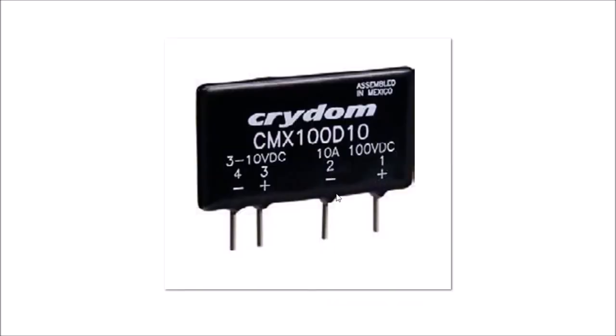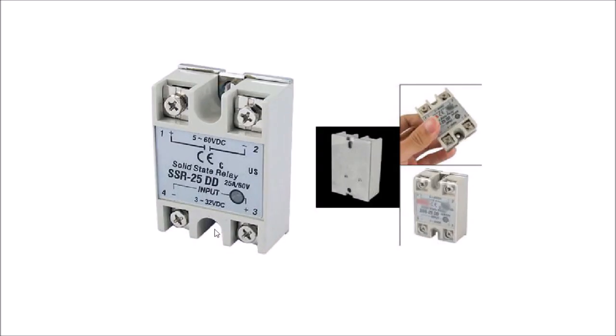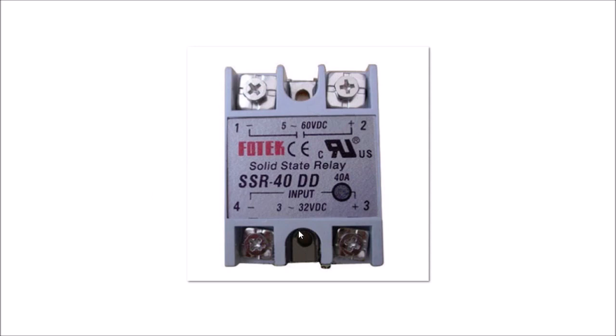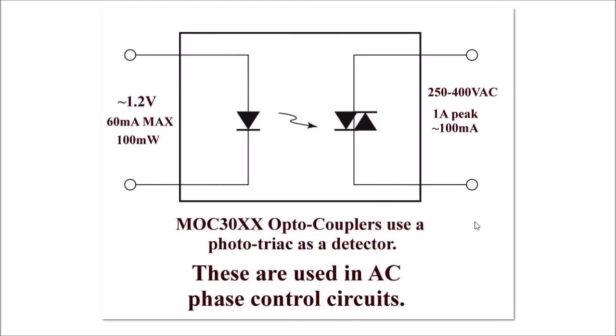Here's a PC board mount solid state relay. Again, this one happens to be DC, but you notice your input voltage is 3 to 10 volts DC. Another example, 3 to 32 volts DC input. Once again, on this 40 amp solid state relay, 3 to 32 volts DC. How is this done? That we will be looking at.